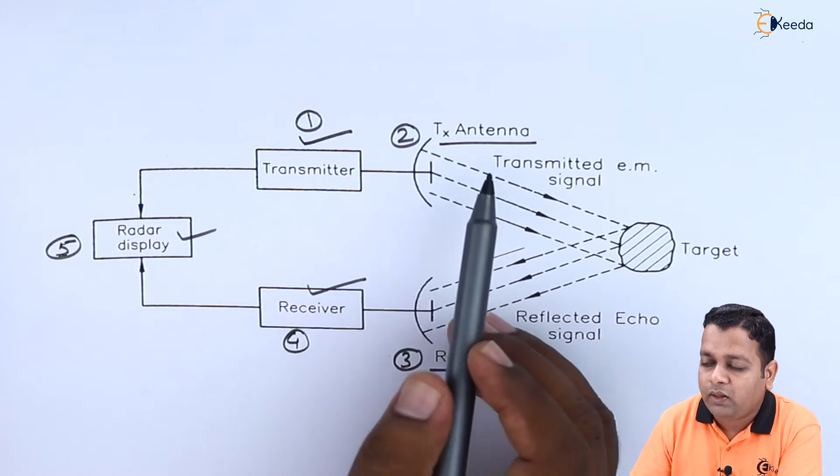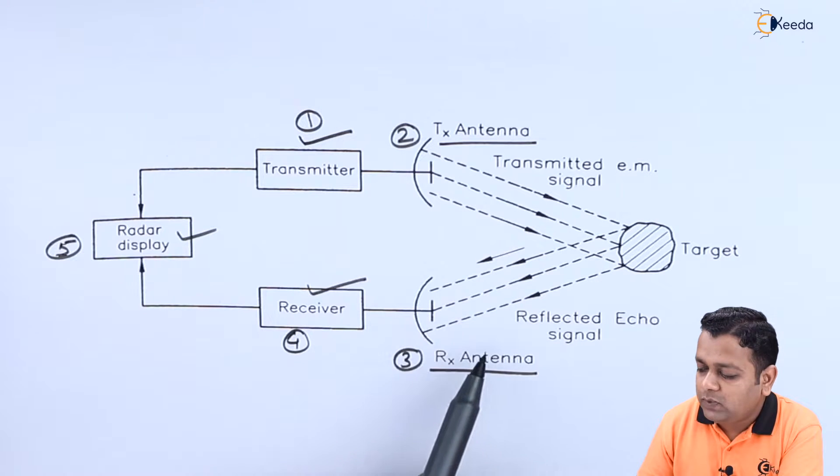For radio detection and ranging, we require these five components to be available: transmitter, receiver, radar display, and the transmitting and receiving antennas.